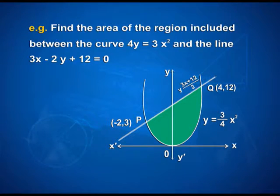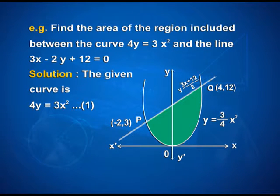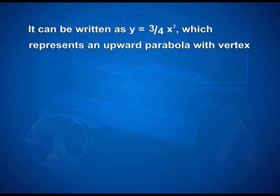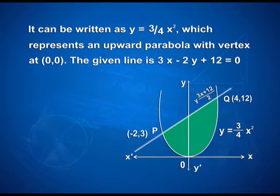One more example: find the area of the region included between the curve 4y is equal to 3x squared and the line 3x minus 2y plus 12 is equal to 0. The given curve is 4y equal to 3x squared, which can be written as y is equal to (3/4)x squared, representing an upward parabola with vertex at the origin (0, 0). We have points P(-2, 3) and Q(4, 12) marked on the figure.